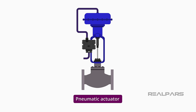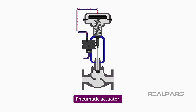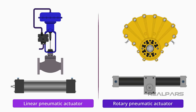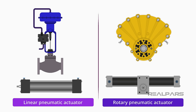Let's move on to the focus of our video — the pneumatic actuator. A pneumatic actuator converts energy in the form of compressed air into movement. Pneumatic actuators are categorized by their type of motion: they are either linear or rotary.